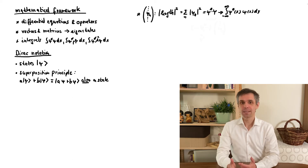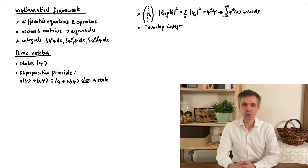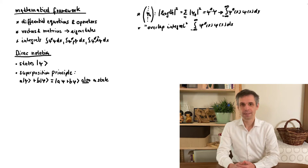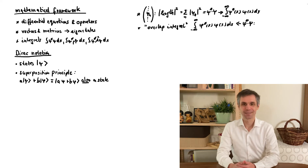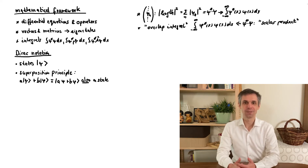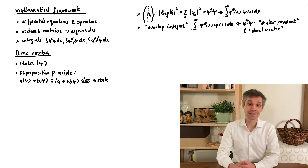We can also take the dot product between two different vectors, and when we do this with this integral, what we obtain we call the overlap integral. Mathematically we call these complex versions of the dot product a scalar product — similar to how we earlier had averages called expectation values and standard deviations called uncertainties. So now we have this mathematical scalar product that in its physical manifestation we call the overlap integral.